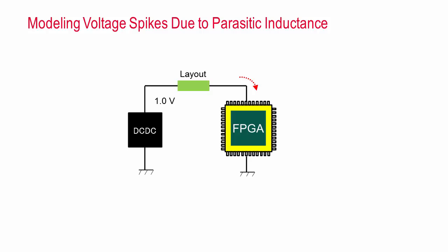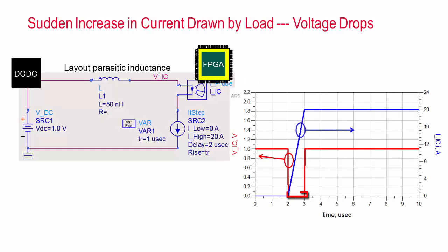This block diagram shows a DC to DC converter supplying some IC, in this case an FPGA. When the FPGA's state changes, causing it to attempt to suddenly draw more current, parasitic inductances in the layout cause an undesired voltage drop. This can be illustrated with a simple pulsed current source, which models the varying current drawn by the FPGA. The voltage at the VIC node drops, depending on the amount of inductance and how rapidly the current changes. This is because of the voltage drop across the inductor, V equal to L di dt.